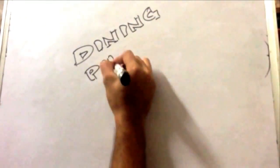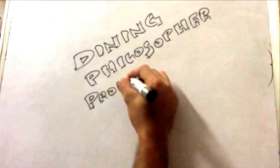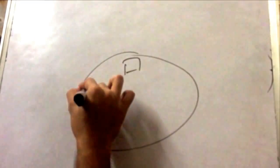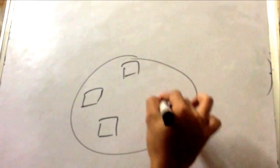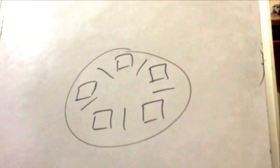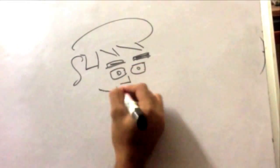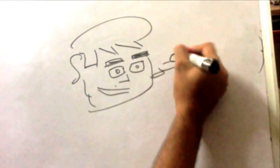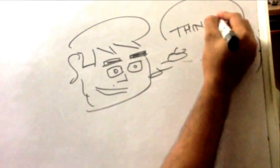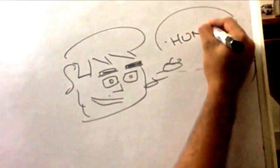Hello everyone. In this video we are going to discuss the dining philosopher problem. Initially we have a table and a set of five plates and a fork lying next to each plate on the table. Next we have five philosophers whose only work is to keep thinking, feel hungry, and eat.